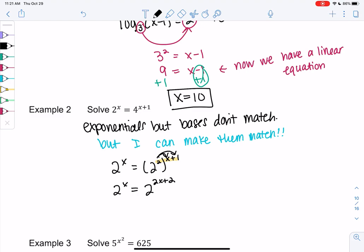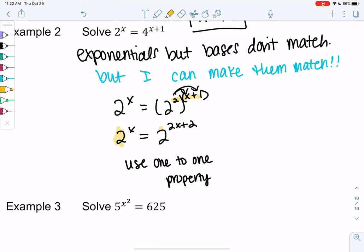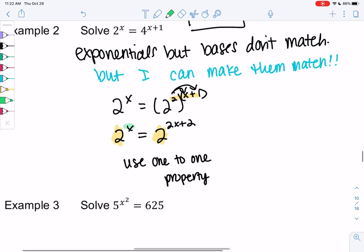I would say the most common mistake is probably not sharing the 2 with the 1. So it's 2 times that whole x plus 1. And now we can use the one-to-one property. And this property only works because the bases match. So 2 and 2 match. So that tells me that x equals 2x plus 2.